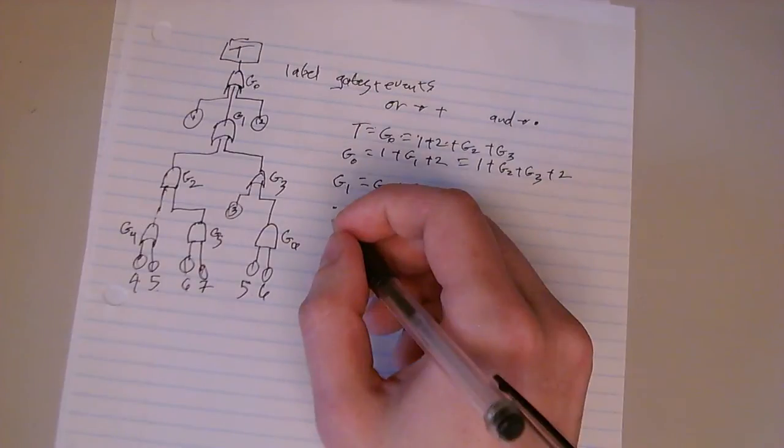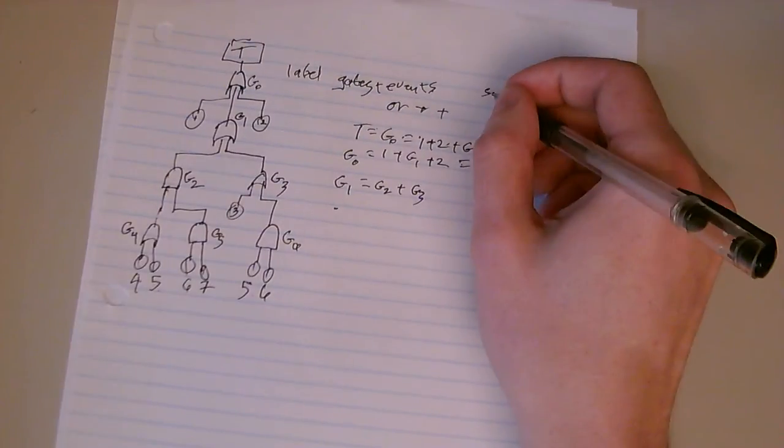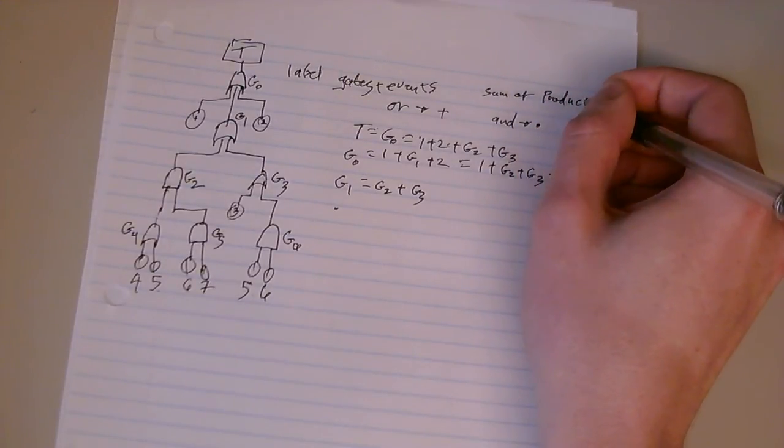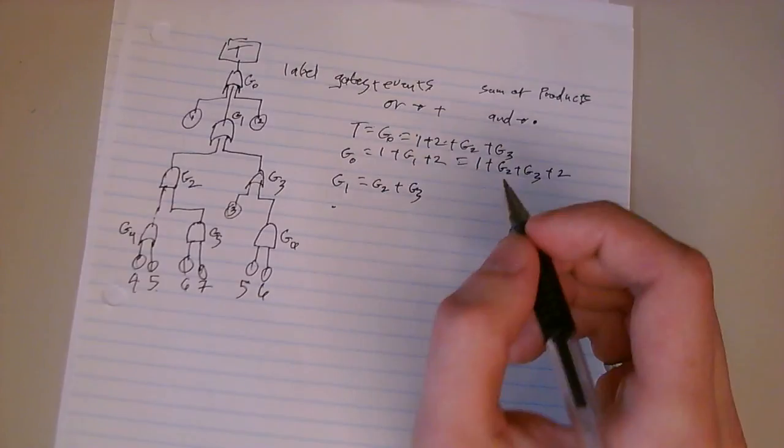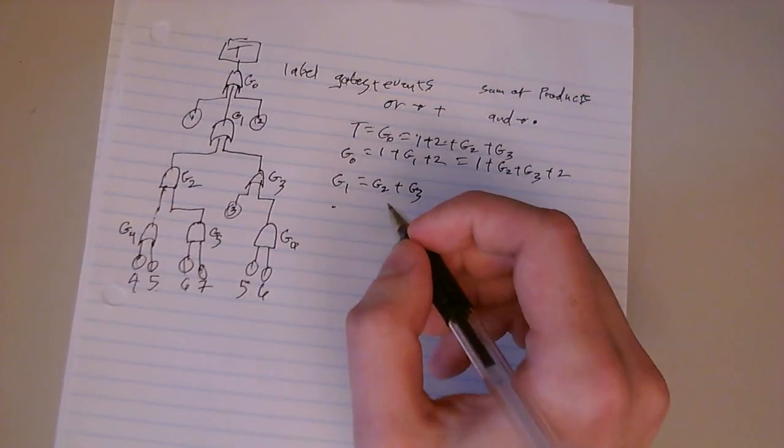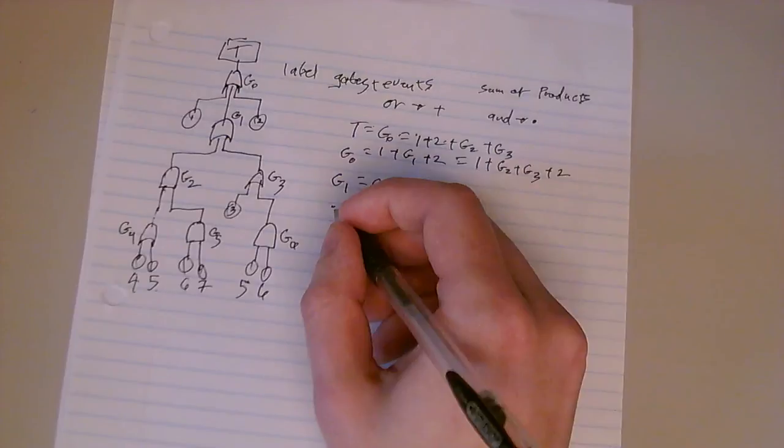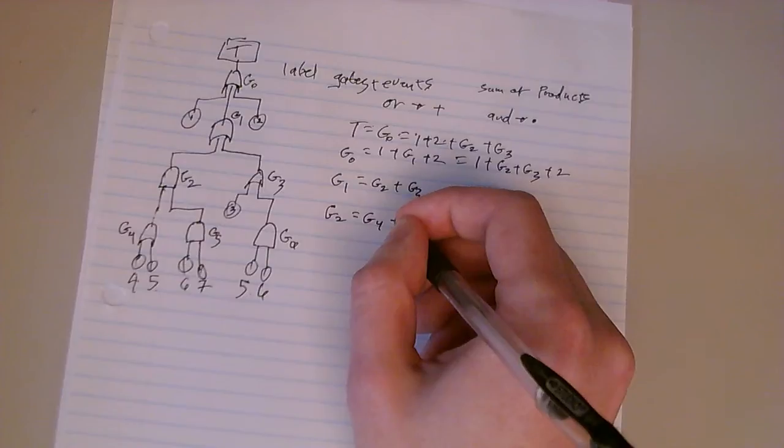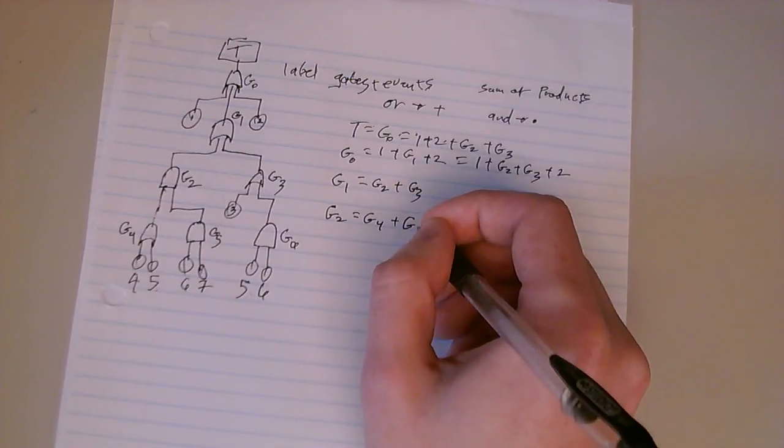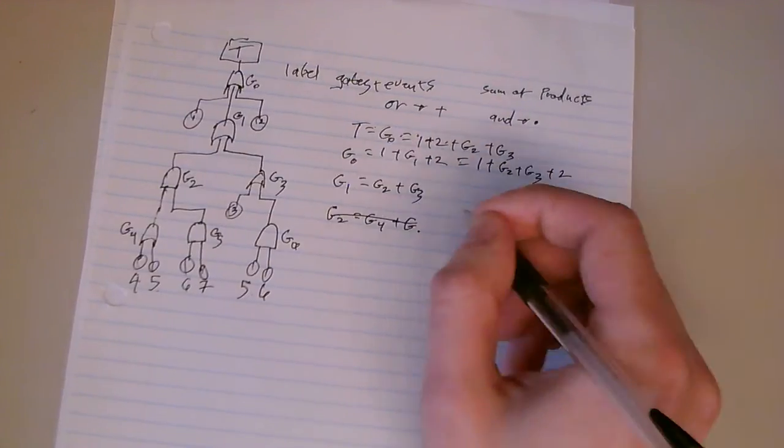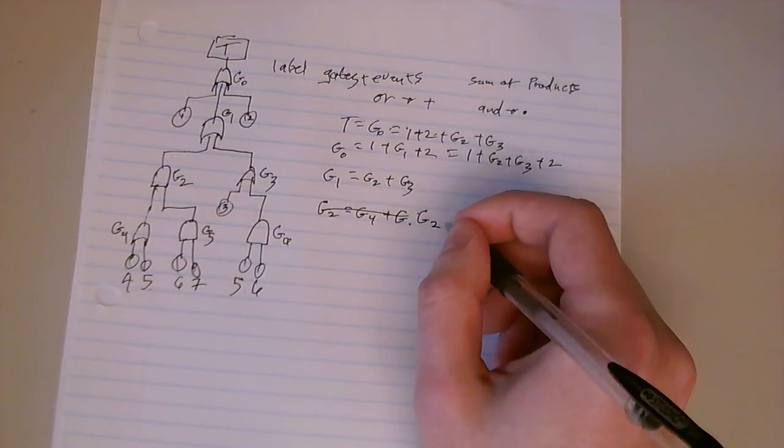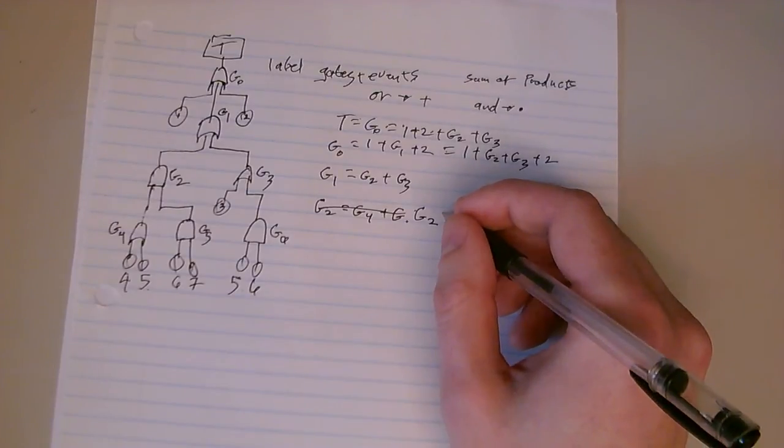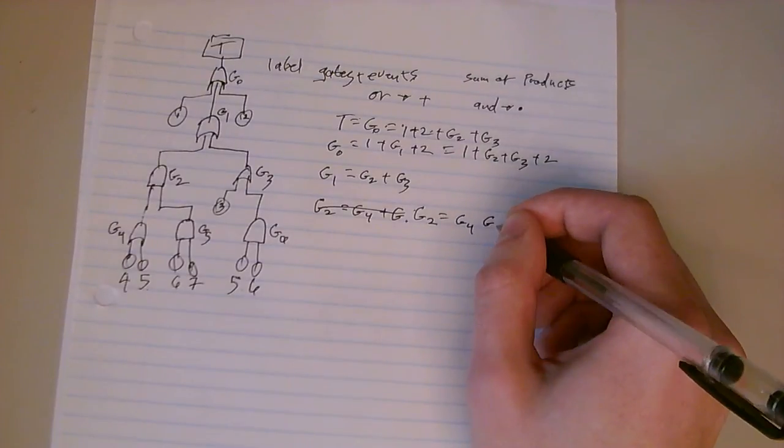Keep going. The idea is you want to get, in the end, a sum of products. 1 plus G6. And then we're going to say G2 equals G4 plus G, I'm sorry, G2. This is an AND gate, so we have G2 equals G4, G5.